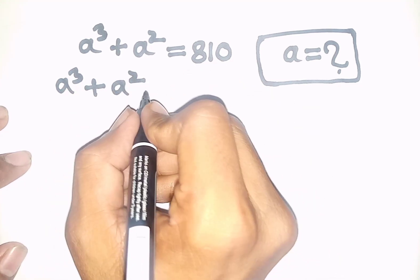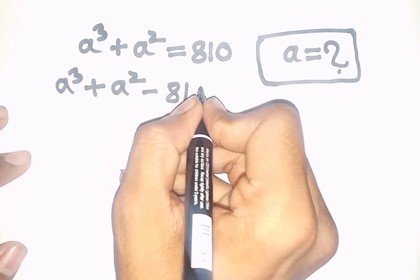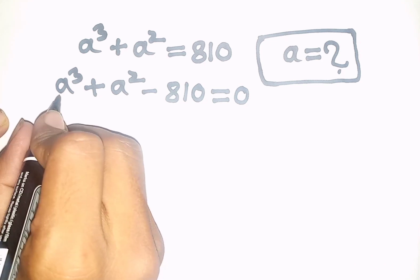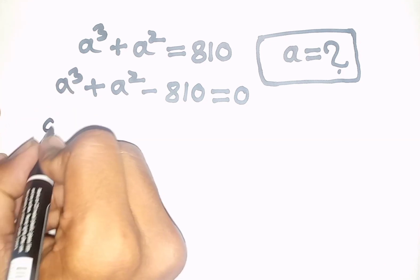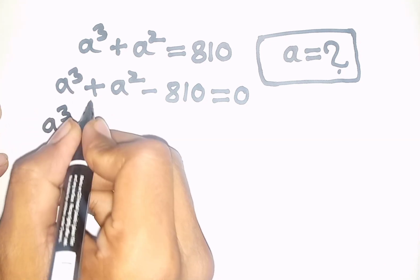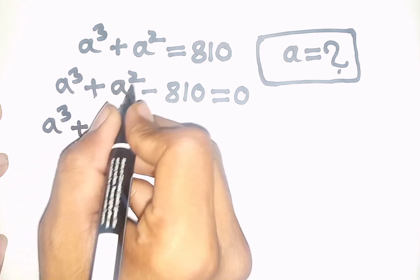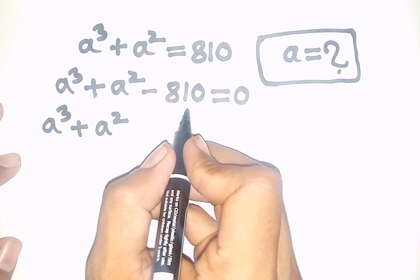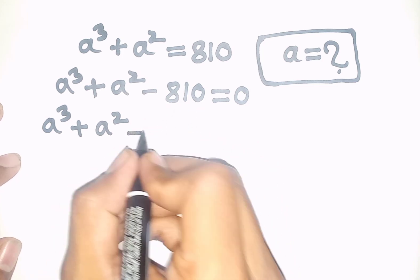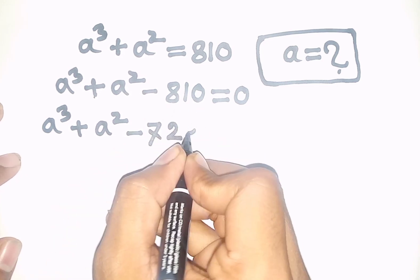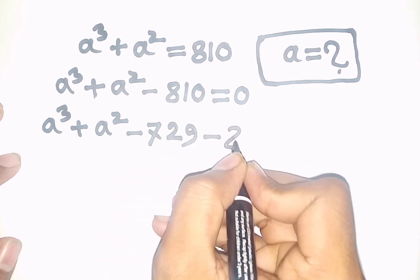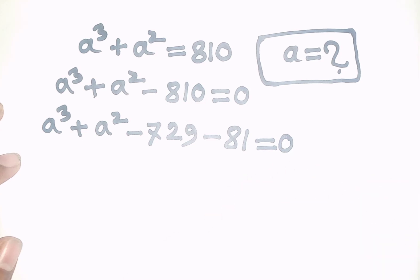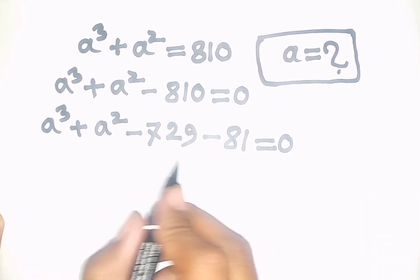Take to the left side. So this will be minus 810, then is equal to 0. Now we can write here a³ + a² minus 810, which is the same as minus 729 minus 81, then is equal to 0.